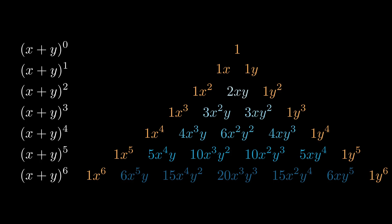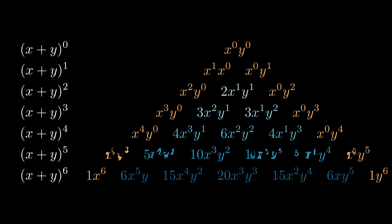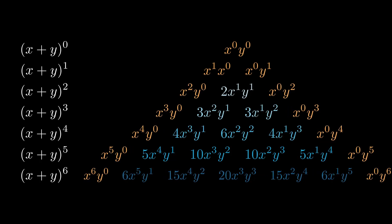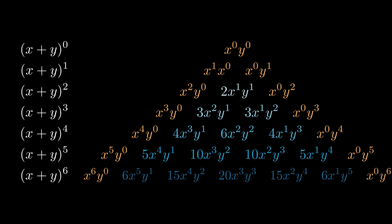The next trend is slightly harder to see, so I'm going to rewrite the expansion slightly differently. Can you notice anything? The first thing is that in a given row, the sum of the powers of the variables add up to the power of the expansion. The second thing which is harder to see is that starting from the left, the powers of y increase from 0 to n, and the powers of x decrease from n to 0. I'm sure many of you could now easily solve x plus y to the 7, or 8, or 10.